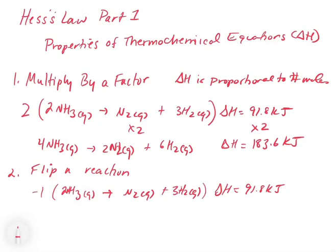If I do that, that's going to be 3H2 gas plus N2 gas gives 2NH3 gas. In essence, we've flipped it around. Now we want to know what happens to delta H.